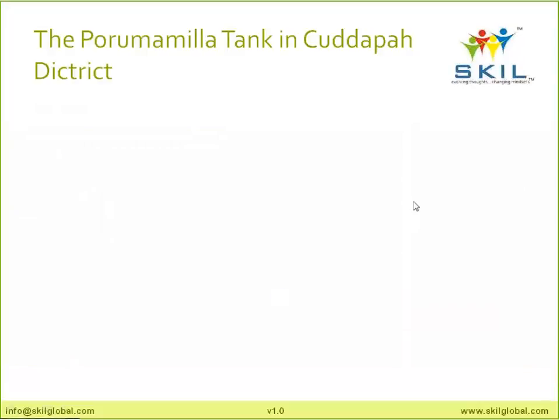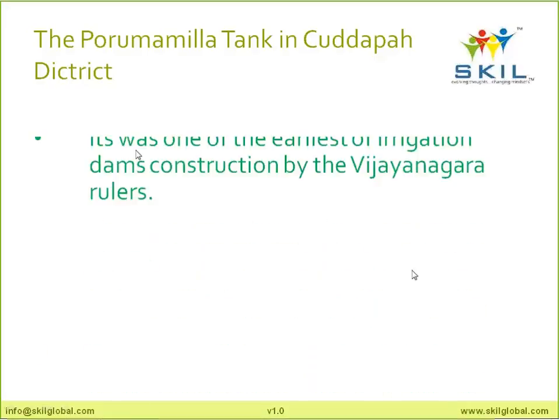What you see is a snapshot of a water accumulation tank called Purumamila, located in Kadapa district, Andhra Pradesh, India. This tank was constructed primarily for drinking water purposes, and it was one of the earliest irrigation dams constructed by the Vijayanagar Empire, way back about 500 years ago. They were pioneers — they constructed many such irrigation tanks, about 40, according to government authority lists I have received.